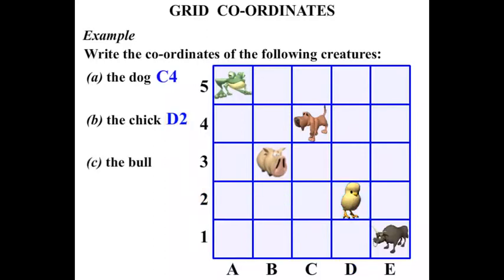What about the bull? Well, there's the bull. It's in the E column and it's in the first row. Row 1. E and 1. So we write E1.